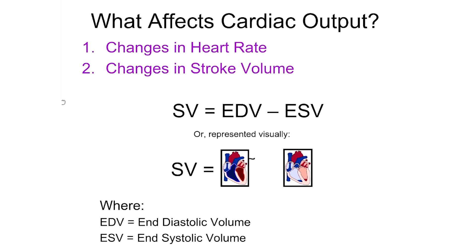Stroke volume is the amount of blood that gets pushed from the left ventricle into the systemic circuit with each contraction of the heart. So anything that affects stroke volume is also going to be affecting cardiac output.